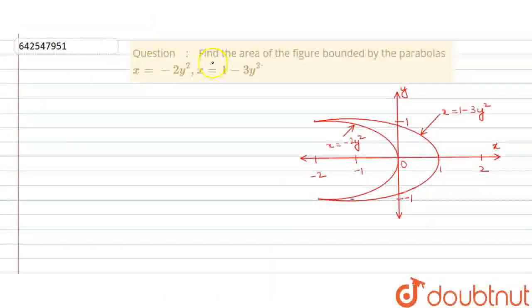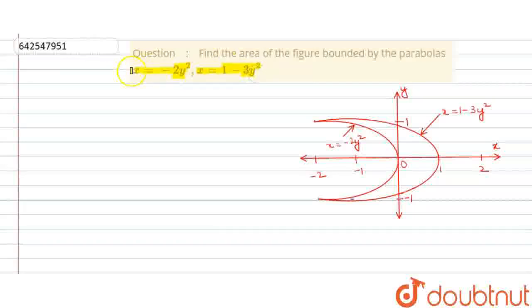The question says: find the area of the figure bounded by the parabolas. The parabolas given are x equals 2y squared and x equals 1 minus 3y squared. So basically, we have to find the area bounded by these two parabolas.